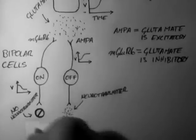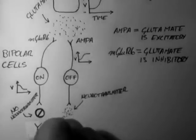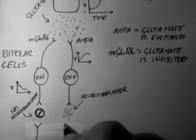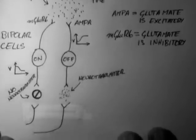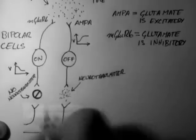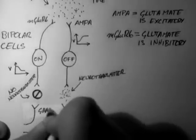The signal is then carried on by ganglion cells, which form the optic nerve. But we're not going to go into that anymore here.